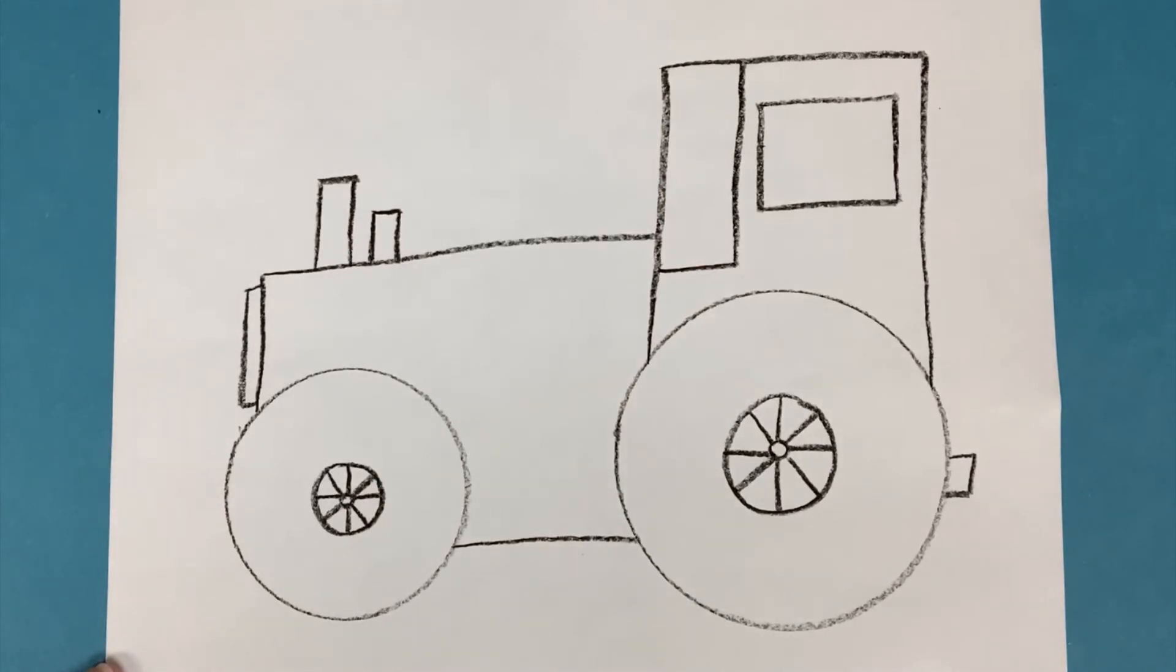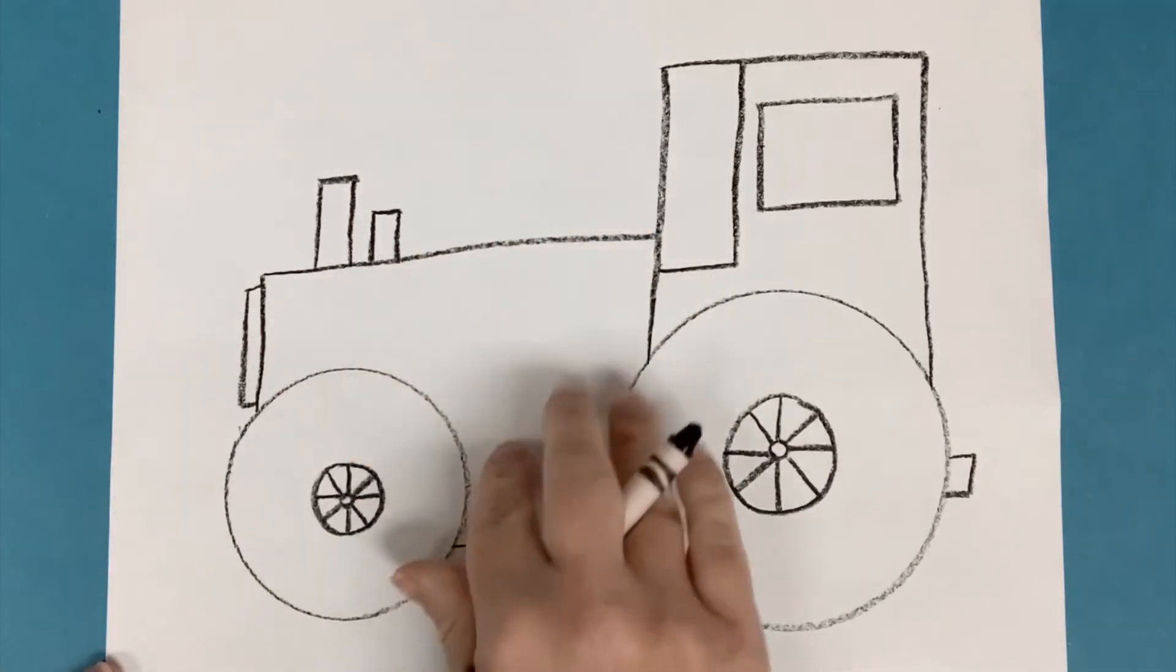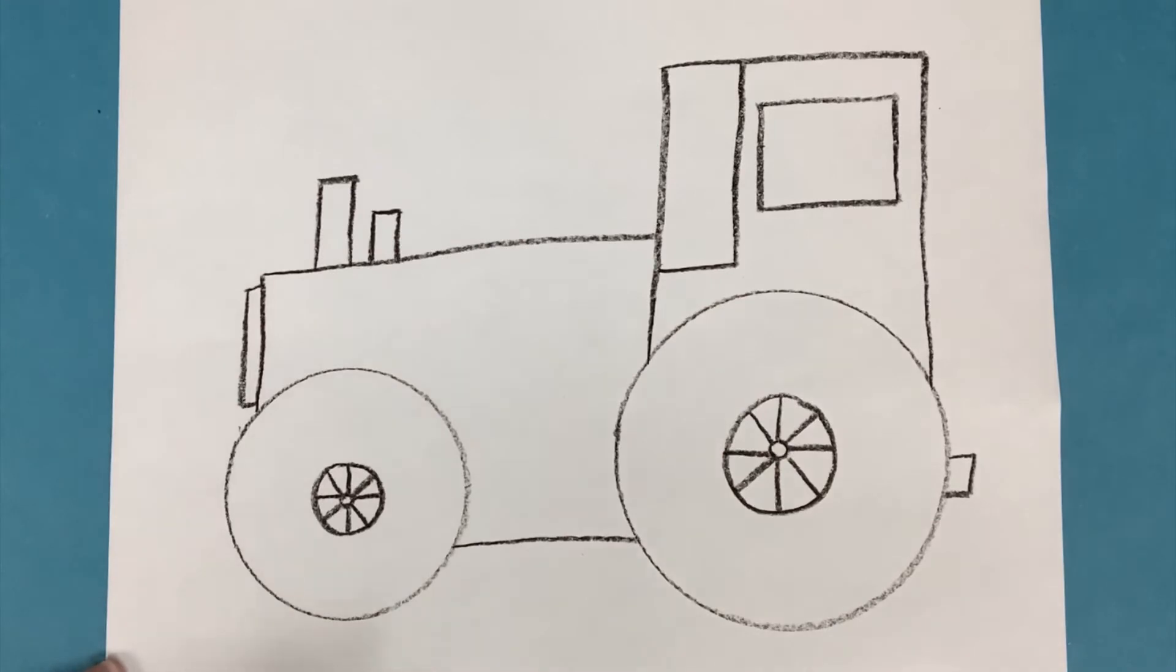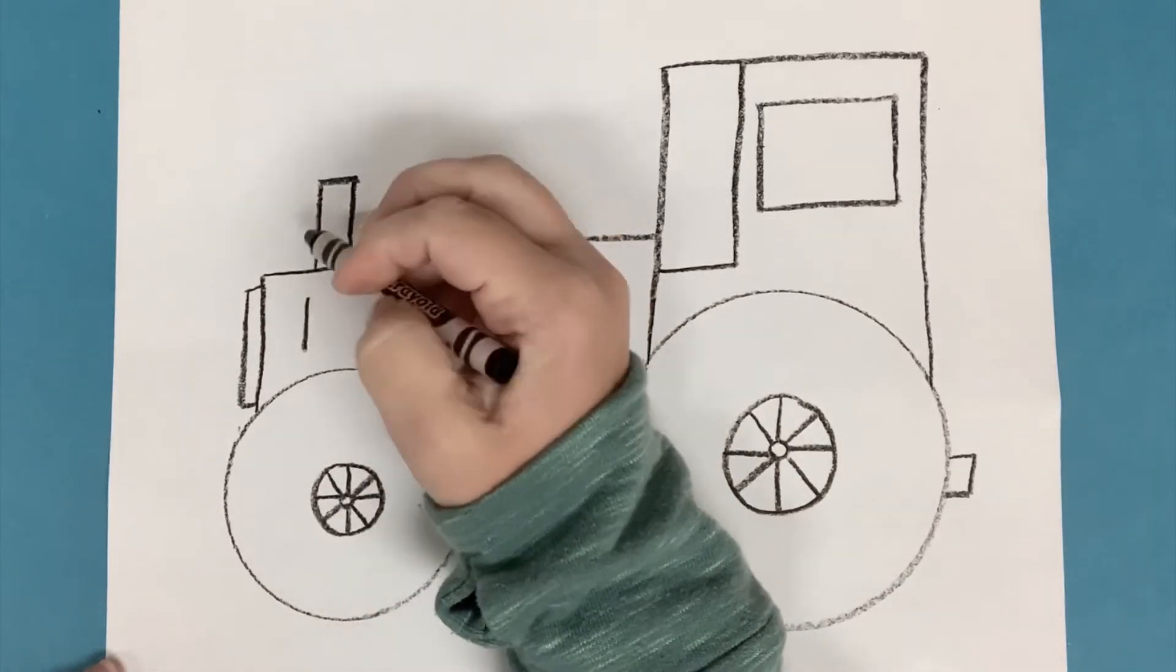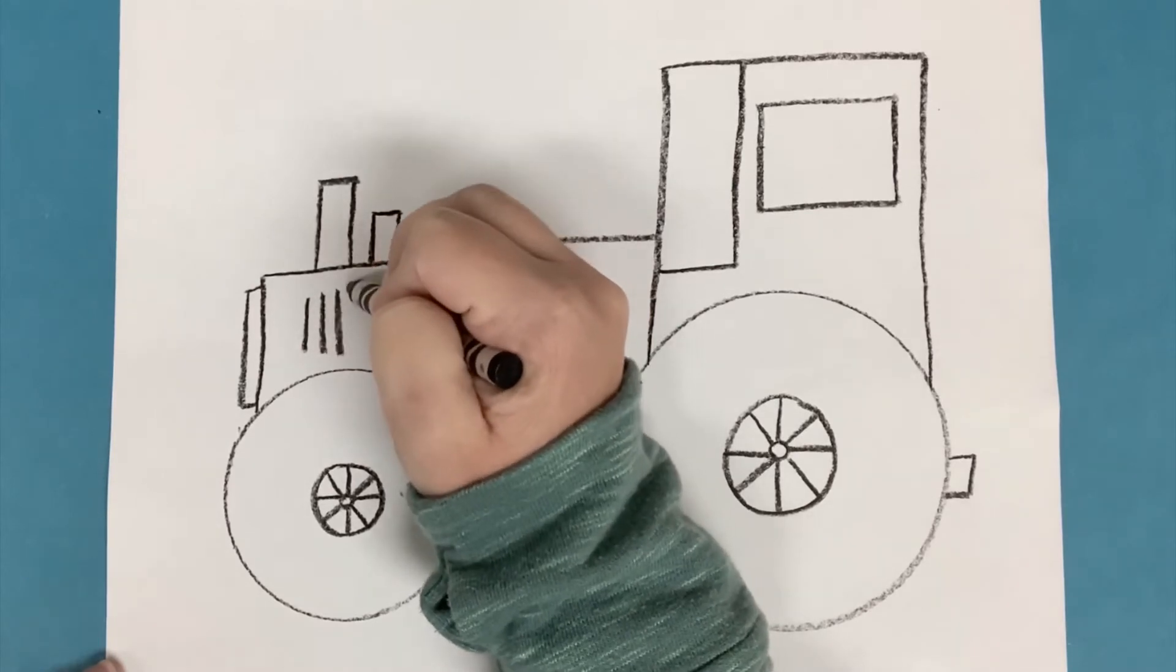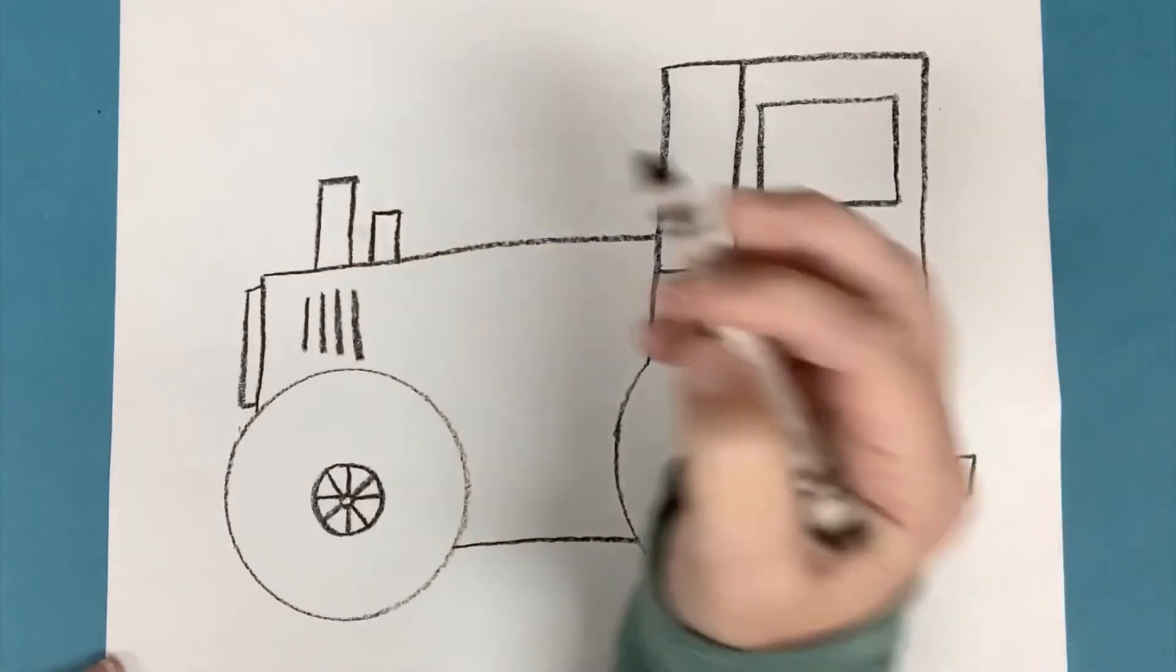Let's draw some more little lines on this part of our tractor to make it look a little more realistic. I'm going to add some vertical lines here. One, two, three, four, maybe about four or five.